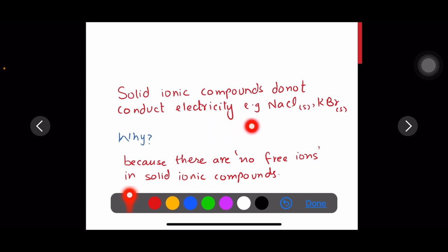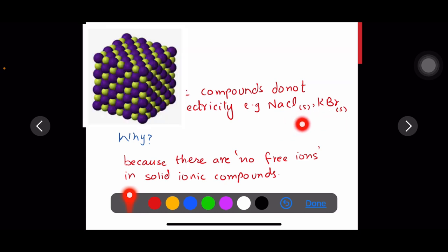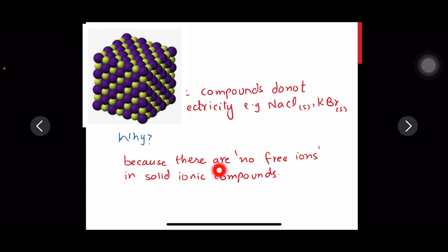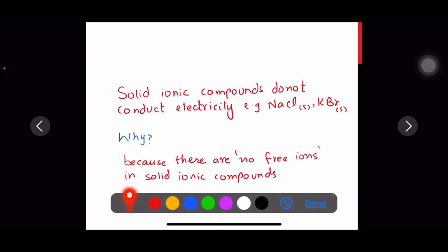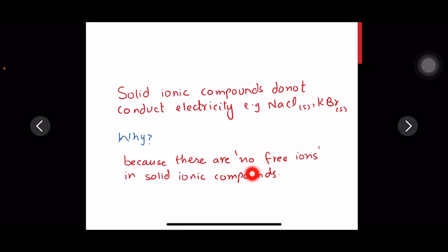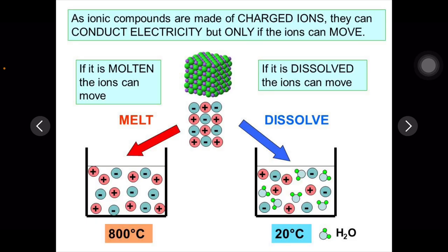Solid ionic compounds do not conduct electricity. Examples: sodium chloride in solid form, potassium bromide in solid form — the 's' represents the solid state of matter. This is because there are no free ions present in solid ionic compounds to carry the electric current, so there is no conduction.